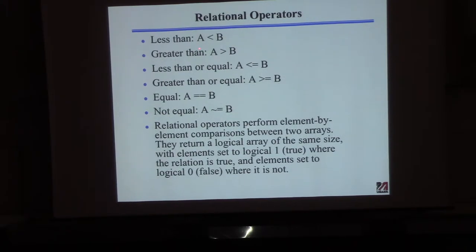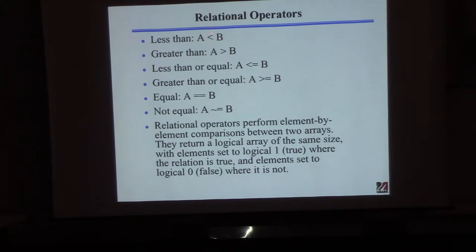So in MATLAB, here are the relational operators. A and B are two MATLAB variables — they might be scalars, vectors of the same dimension, or even matrices of the same dimension. This is less than, greater than, less than or equal to, greater than or equal to. In MATLAB, equal to is a double equals sign — not a single equals. And this symbol here means not equal to.